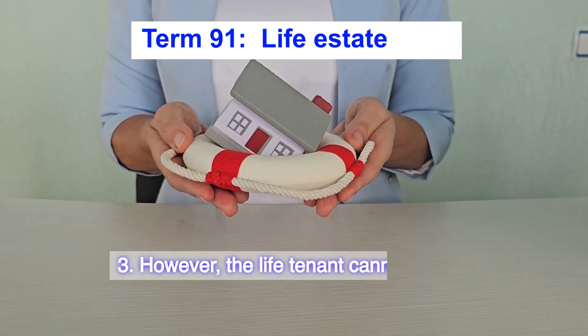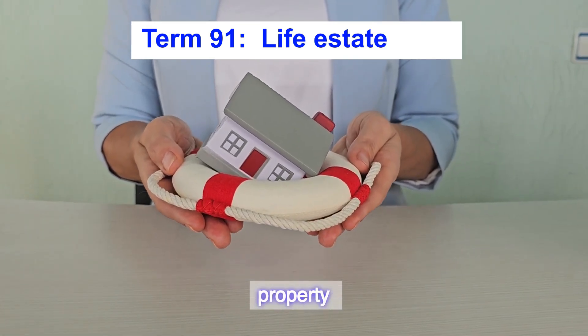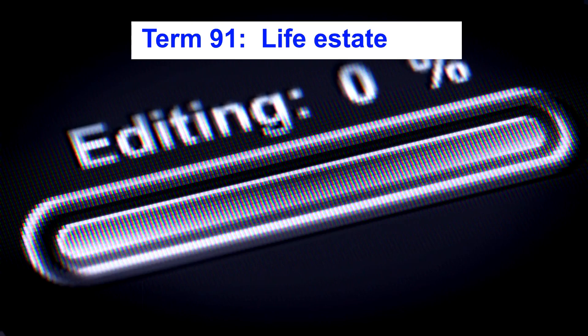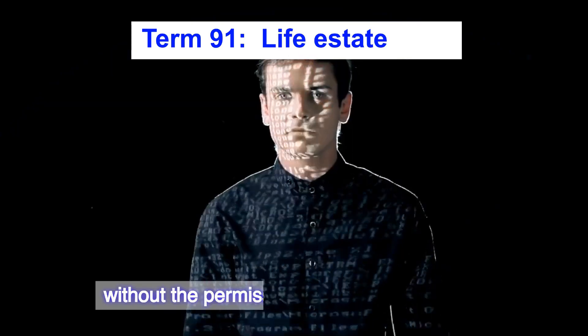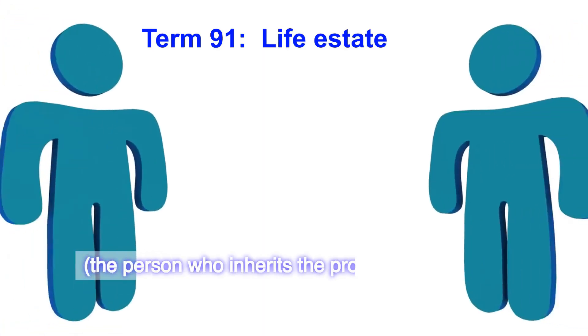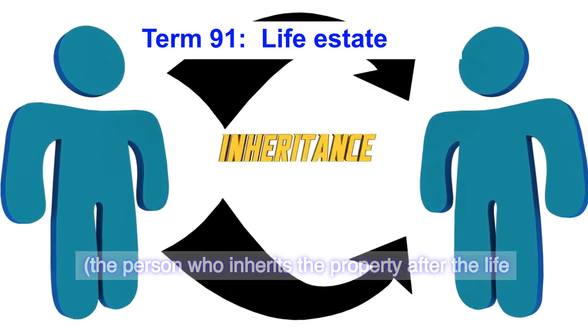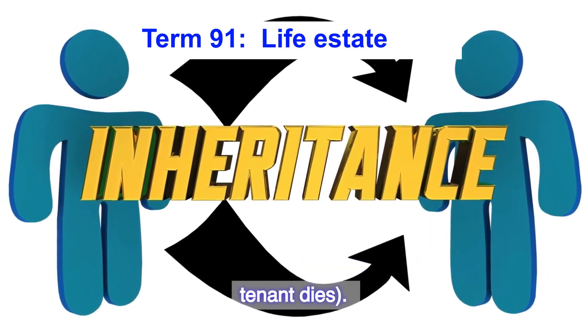3. However, the life tenant cannot sell the property or make permanent changes to it without the permission of the remainderman — the person who inherits the property after the life tenant dies.